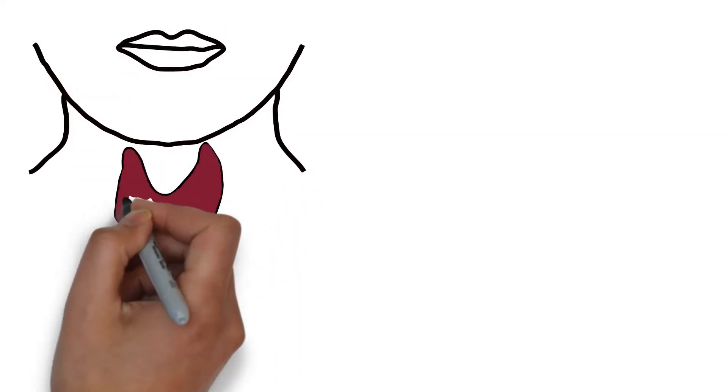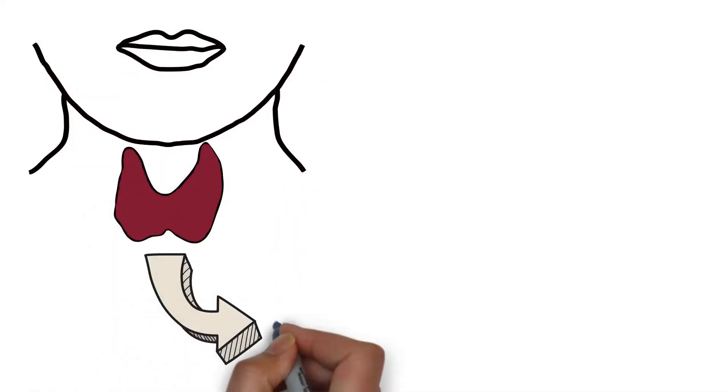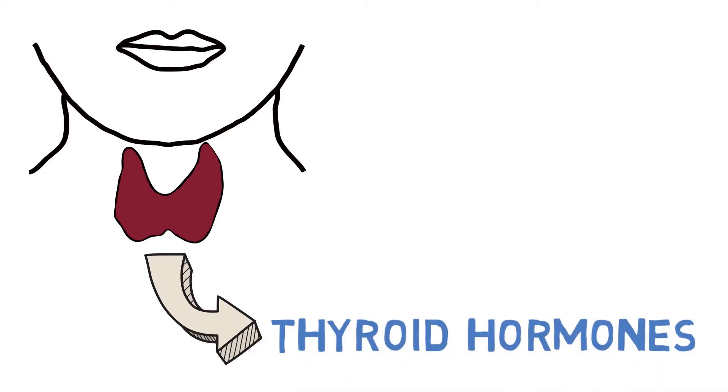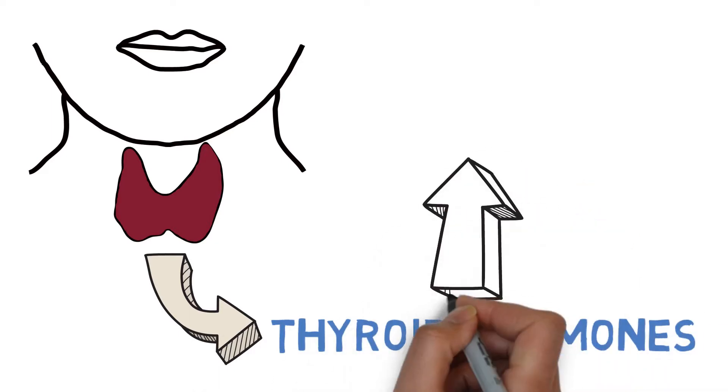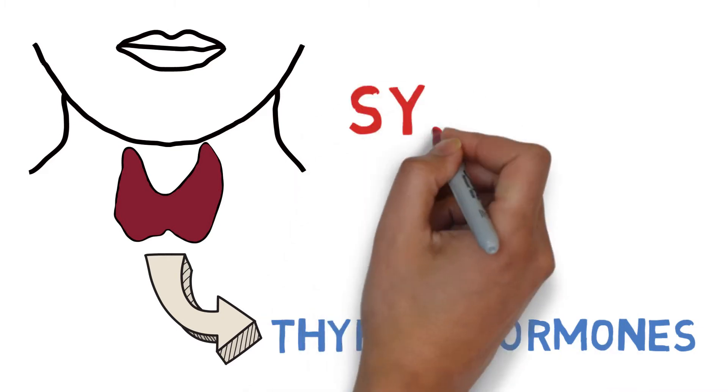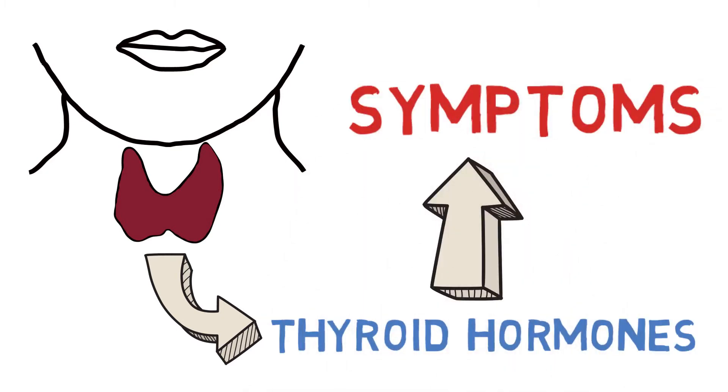Hyperthyroidism is a condition where the thyroid gland produces excessive amounts of thyroid hormones. The vast majority of symptoms of hyperthyroidism are a direct result of this hormone imbalance. The symptoms vary individually, but some of them occur in the majority of patients.